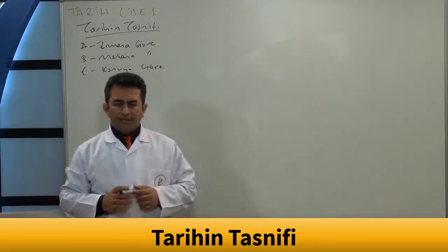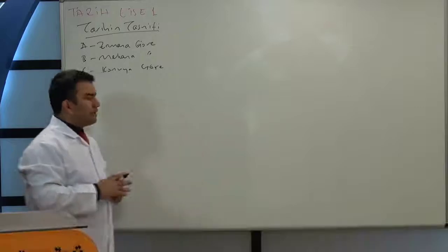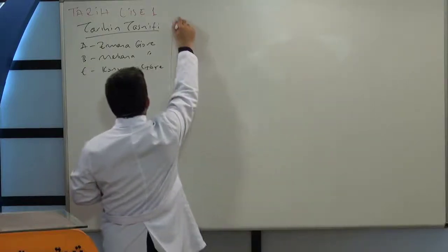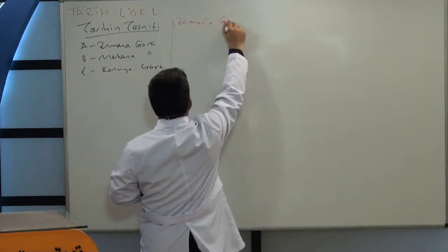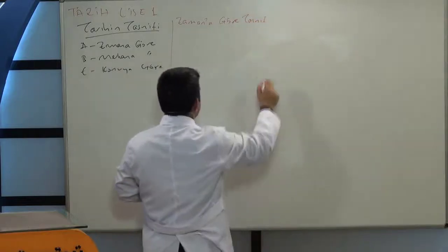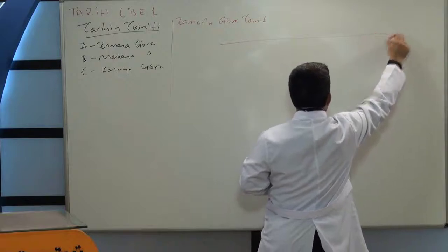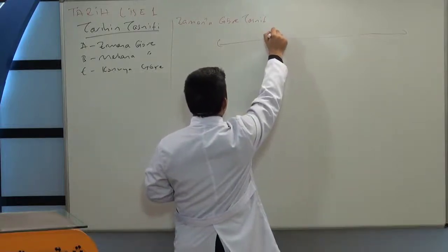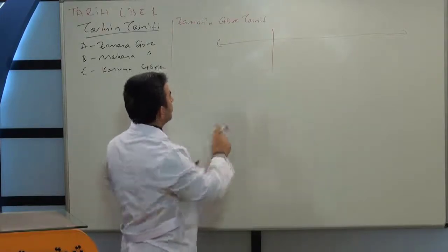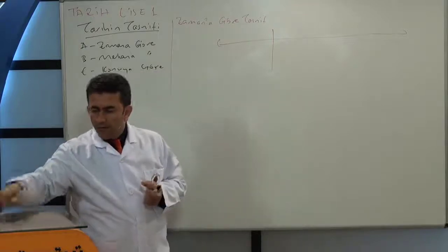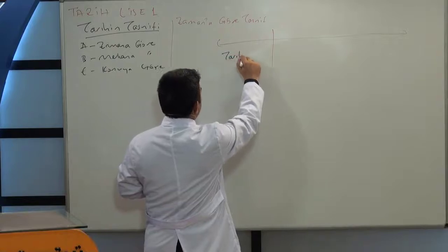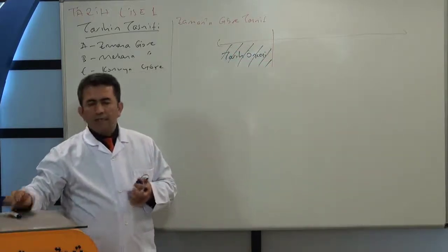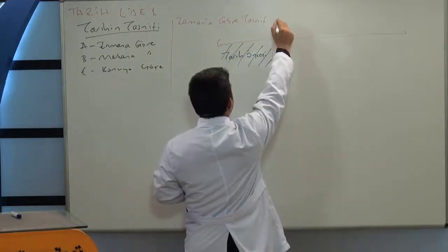Genel itibariyle en fazla kullanılan yöntem zamana göre tasniftir. O zaman zamana göre tasnifi anlatıyorsak, bir zaman şeridi hazırlamak durumundayız. Bu bizim zaman şeridimiz olsun. Zaman şeridimizde tasnifi yaparken önce ikiye ayırmamız gerekiyor: tarih öncesi ve tarihi devirler. Tarih öncesi ile tarihi devirleri birbirinden ayıran yazının bulunmasıdır.